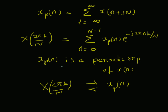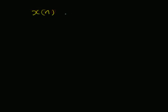But our goal is actually to recover the original signal x(n), not x_p(n). So we must look at the condition under which x(n) can be recovered from x_p(n). For that, we define x(n) as having a length equal to L.